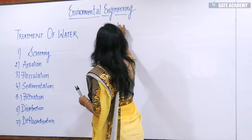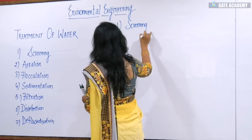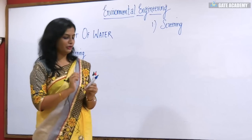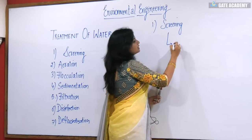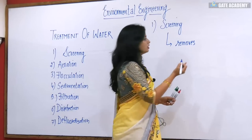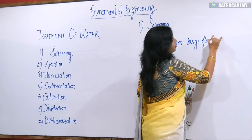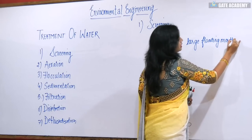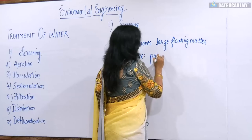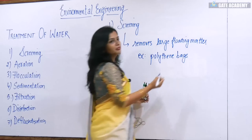First comes the screening part. What is screening? This is the first part of the treatment unit. It removes large suspended particles — or large floating matter. For example, paper bags, polythenes, etc., which are floating in the water. These can be removed by screening.